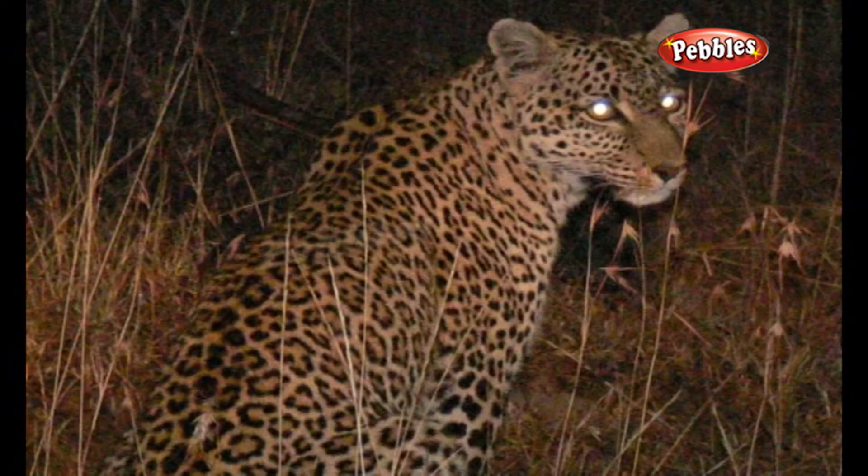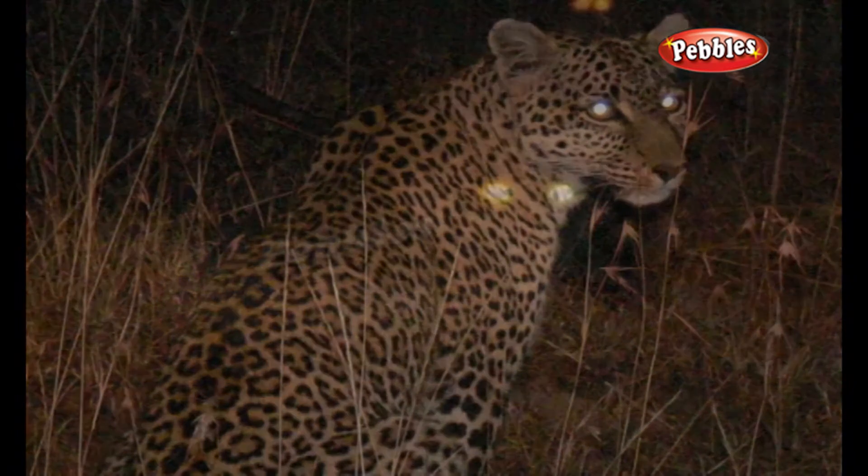Creatures that live in the dark tend to have much bigger pupils to let in more light. Cats, which also spend much of their time hunting at night, are among creatures whose eyes contain a tapetum.